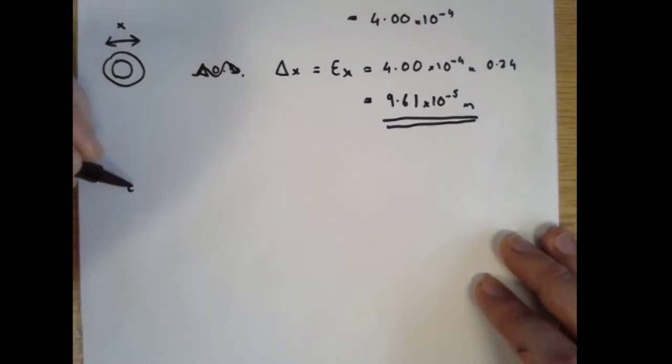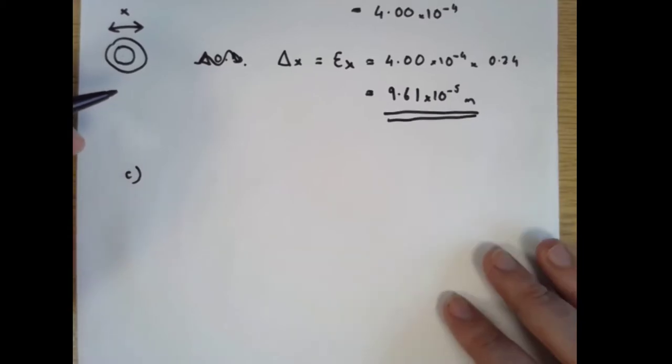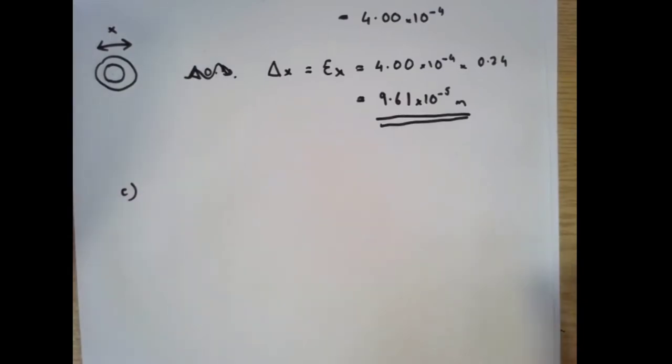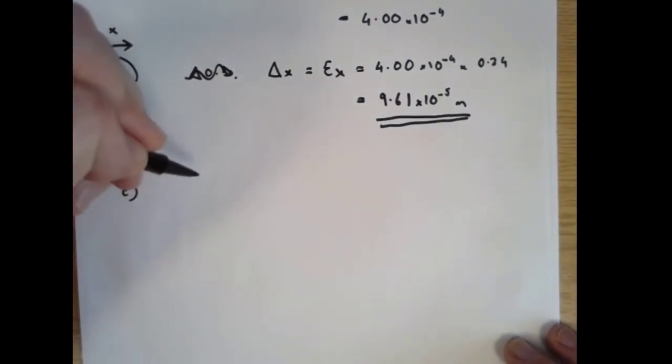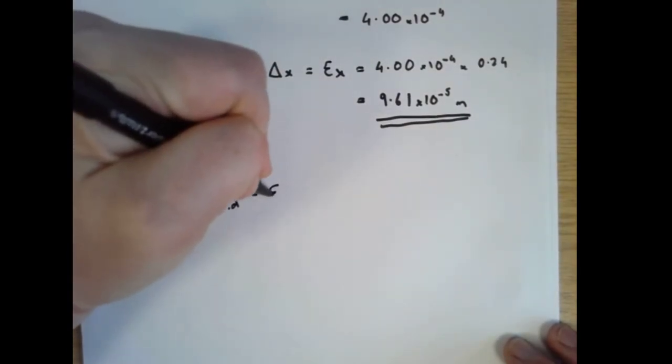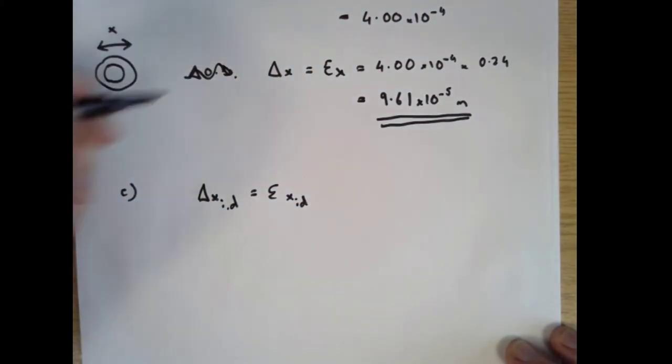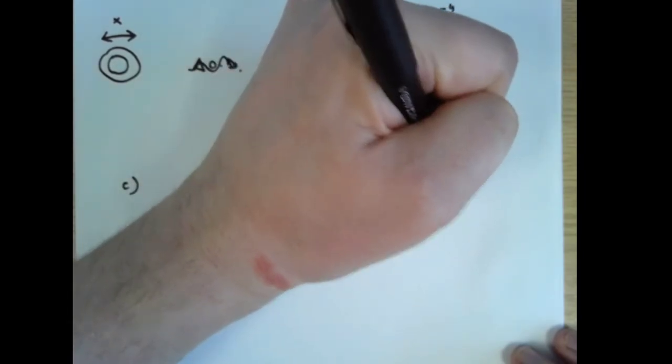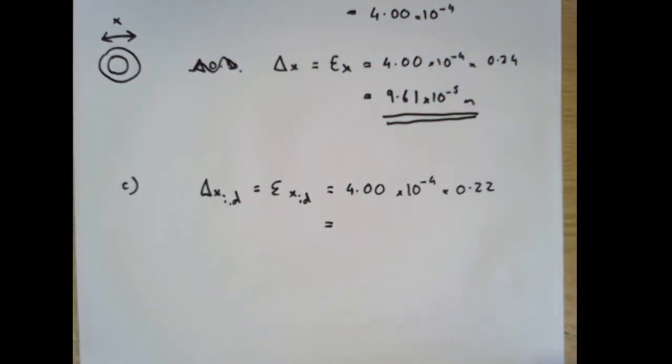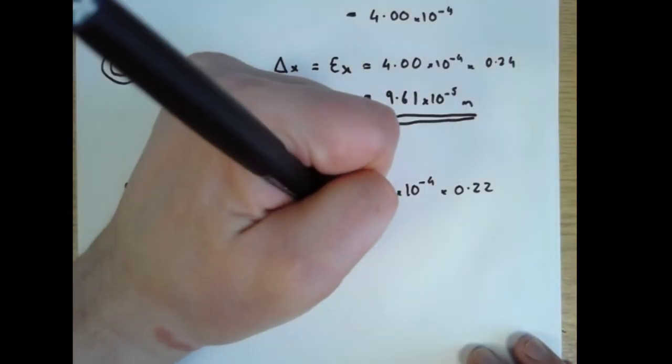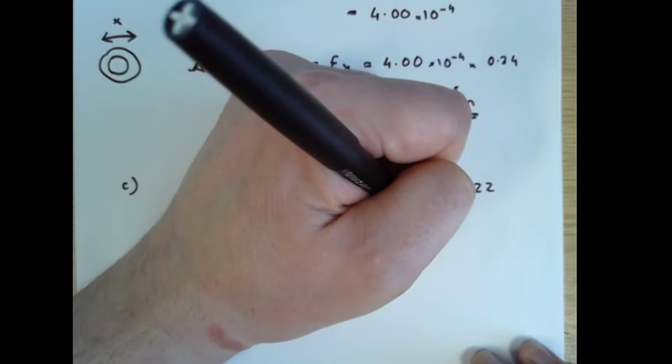We can go on and do part C, which says find the change in wall thickness. Well, if we find the change in inner diameter, and we know the change in outer diameter, we're starting to get to the change in wall thickness. So delta x on the inner diameter is ε times the original inner diameter, which is 4.00 times 10 to the minus 4 times 0.22, which is 8.8 times 10 to the minus 5 meters.